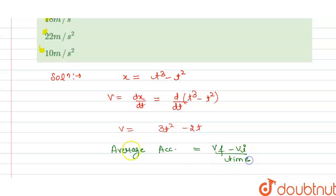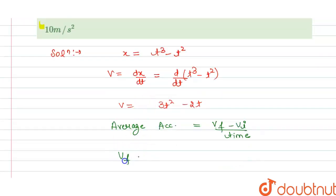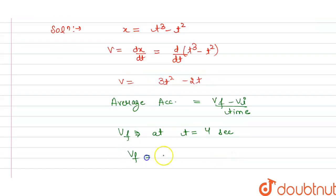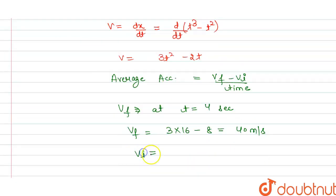So we have final velocity at time t equals 4 seconds. So we have this is 3 times 16 minus 8, so this is 40 meters per second. This is our final velocity. And we have the initial is...